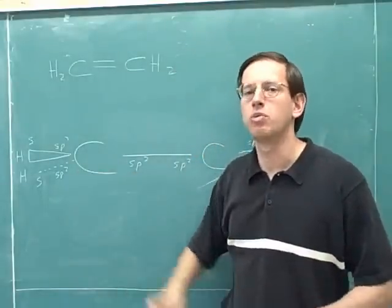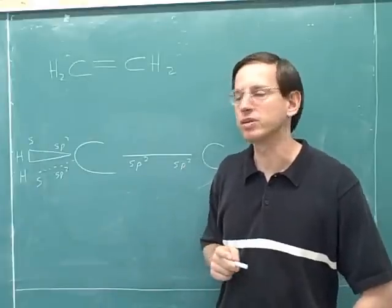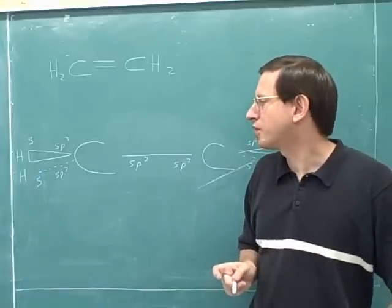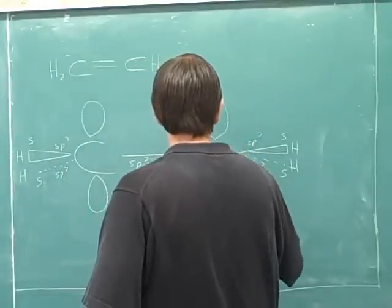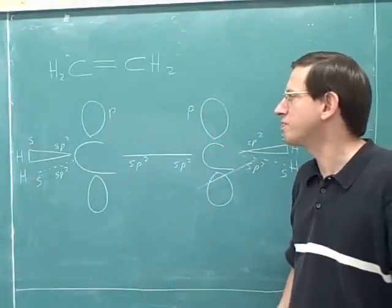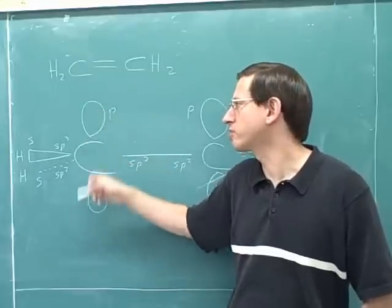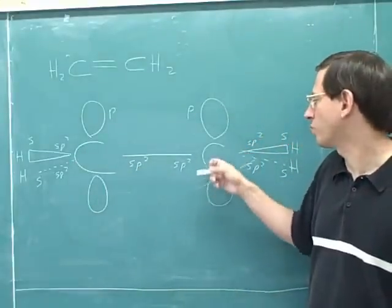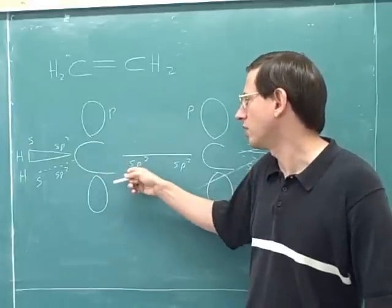Does this carbon have any other orbitals that I haven't mentioned yet? Absolutely. We know that when an atom is sp2 hybridized, it has three sp2 orbitals and also one p orbital. I am going to draw that p orbital. I should draw the p orbital perpendicular to all the other orbitals. Here's the p orbital on this carbon, and here's the p orbital on this carbon. Remember that p orbitals have two equal-sized lobes — one lobe up here and one lobe down here. Both lobes represent the same one p orbital.